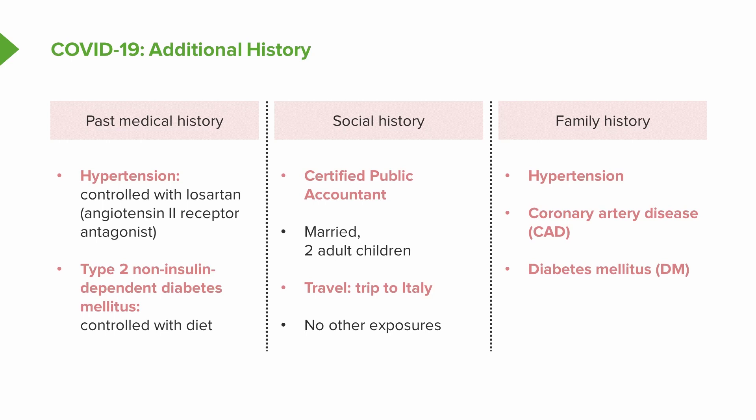What leaps out from this additional history is that Mr. Lecturio has two comorbidities: hypertension treated with losartan and diabetes mellitus. As a certified public accountant with extensive face-to-face client contact, he has potential for sick contacts beyond what he reports. His significant travel exposure from the cruise ship and that region of the world — where COVID-19 is circulating along with other respiratory viruses — and his family history of comorbidities are all associated with worse disease progression with COVID-19.